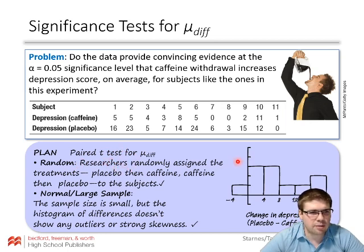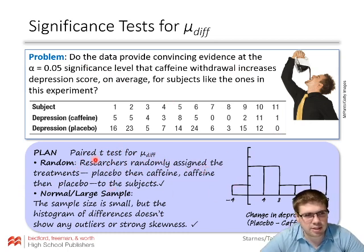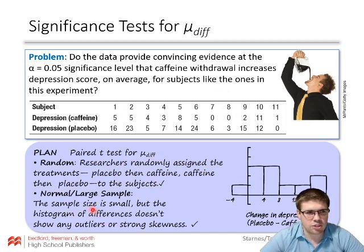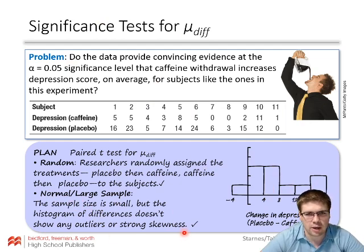For conditions: they randomly assigned the order of treatments — placebo then caffeine, or caffeine then placebo — to the subjects, satisfying the random condition. We don't need to check the 10% condition because this is an experiment. We do need to check normality: the population distribution is unknown and the sample size is small, so we graph the differences and it looks pretty good — no major skew or outliers.